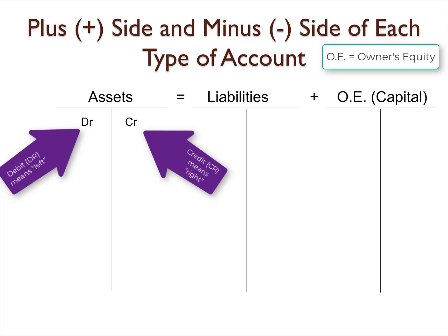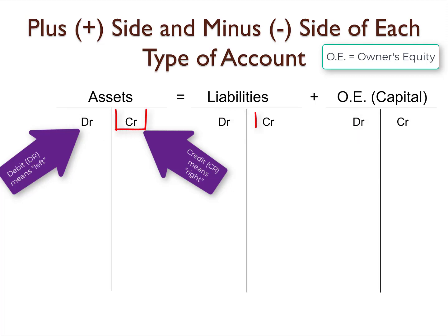Debit is abbreviated as DR and credit is abbreviated as CR. The left side is always the debit and the right side is always the credit, no matter if it's an asset account, liability account, or owner's equity account.